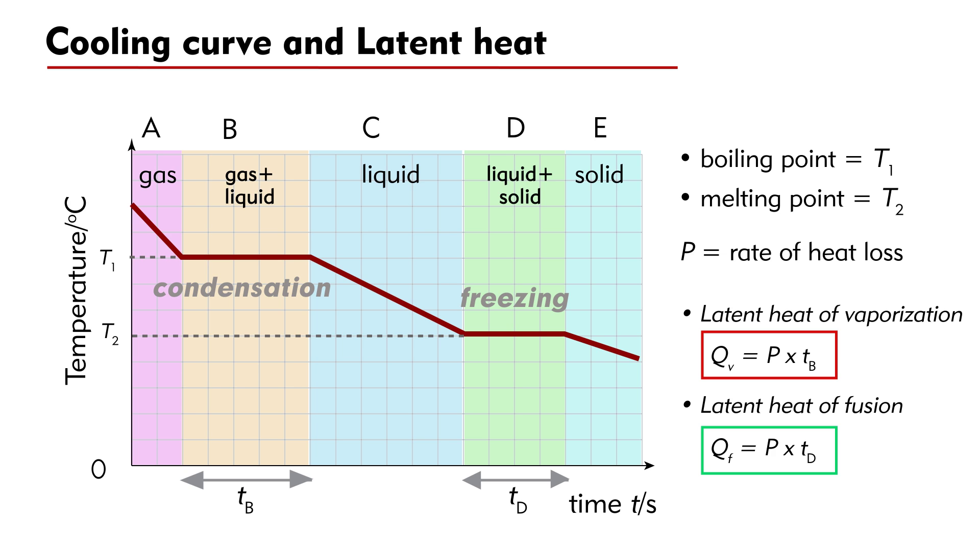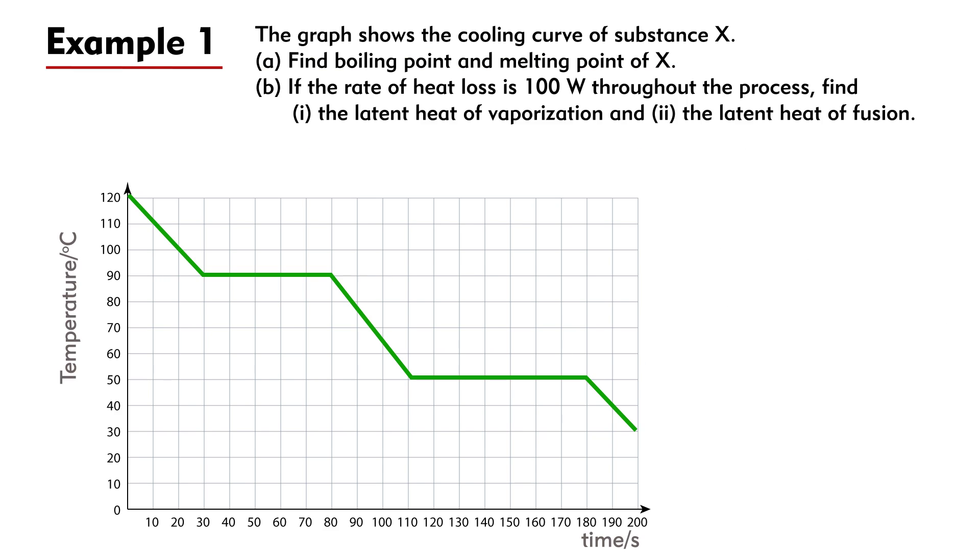Let's look at a cooling curve with numerical values. Example 1. The graph shows the cooling curve of substance X. (a) Find the boiling point and melting point of X. (b) If the rate of heat loss is 100 W throughout the process, find (i) the latent heat of vaporization and (ii) the latent heat of fusion.